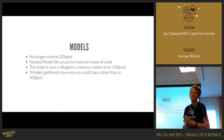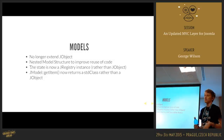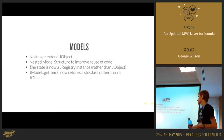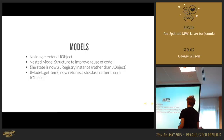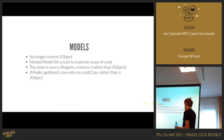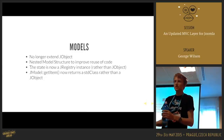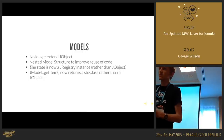JObject removal also applies to models: the state is now a registry object rather than a JObject, and JModel getItem used to return a JObject and now returns stdClass.